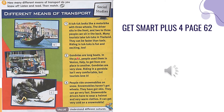Two — gondolas are long boats. In the past, people used them in Venice, Italy, to get from one place to another. Gondolas are very slow. Riding in a gondola isn't very comfortable, but tourists love it.